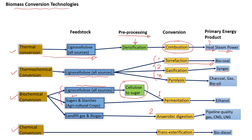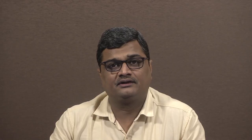For pure sugars and starches, the material can be directly fermented to produce ethanol. In anaerobic digestion, waste materials are primarily used. There are 2 alternative processes: landfill gas and biogas. In the biogas process, waste materials are converted into biogas, and after a gas cleaning process, the product can be used as pipeline-quality gas, CNG, or LNG.